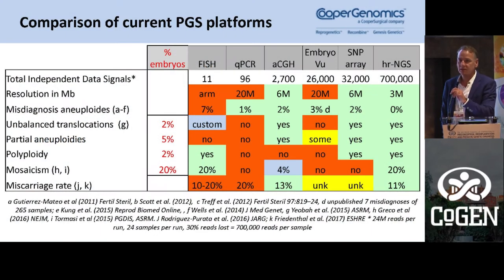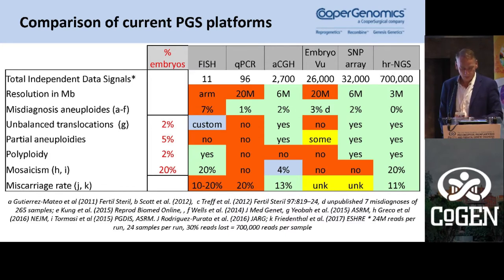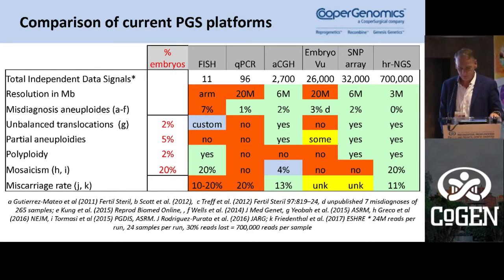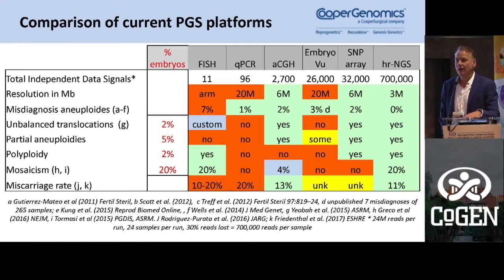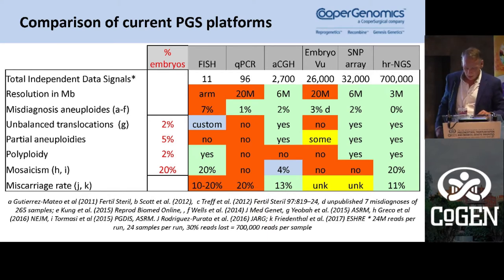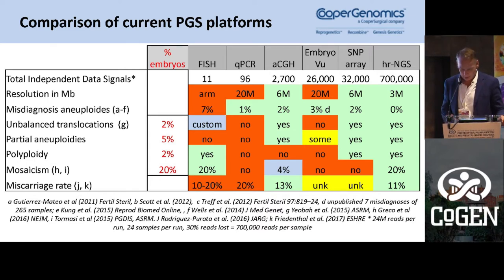As you know, there are a bunch of different techniques we can use for PGS. Of those techniques, some are just detecting a few data points. The one we're using is high-resolution next-generation sequencing, which tests on average about 700,000 data points. That allows us to detect mosaicism — for example, if you have a biopsy of five cells, you'll be able to see if you have one in five or four in five abnormal cells.